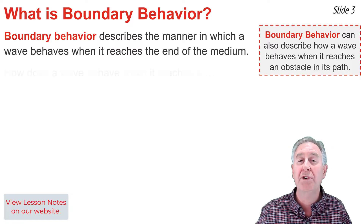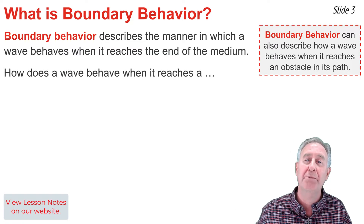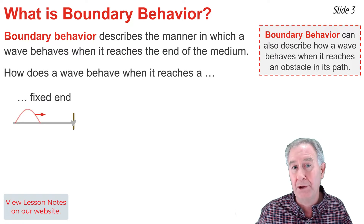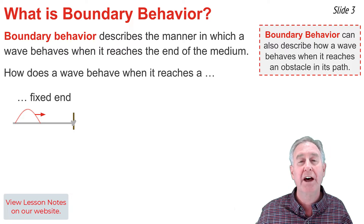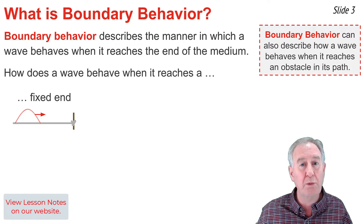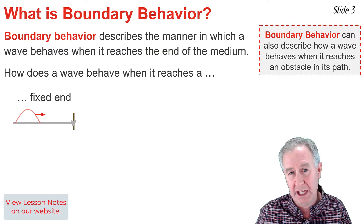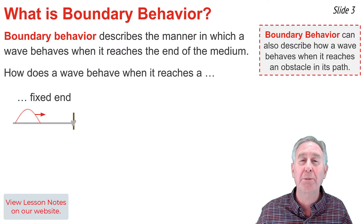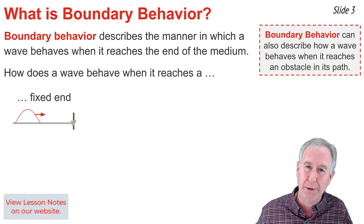In this video, we'll be focusing on three types of boundary behaviors. The first is the behavior of a pulse when it reaches the fixed end of a medium. A fixed end might be a rope which is tightly secured to a pole. When that pulse reaches the end, that last segment of the rope is incapable of vibrating up and down because it's fixed on the pole.